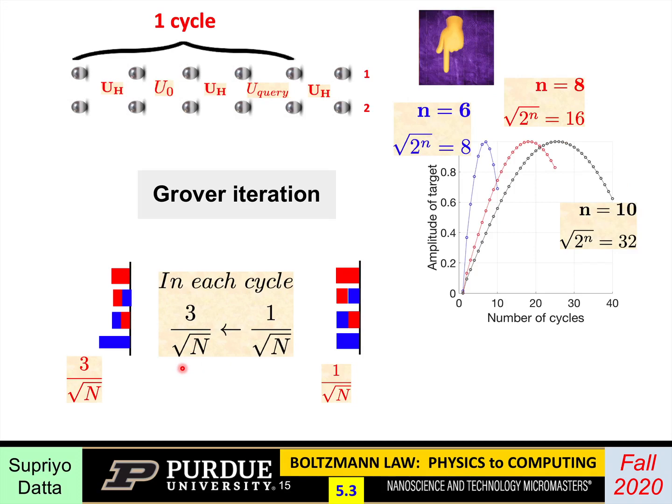In every cycle, this enhancement occurs. If you apply the enhancement a number of times, then finally the target amplitude will become big enough that you'll be easily able to detect it. How many would you need? Since it goes up by square root of N every time, by 2 over square root of N, it means you need something like square root of N applications, or cycles, to build it up to 1, at which point you couldn't miss it.